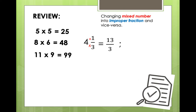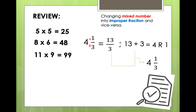So, what if from improper fraction to mixed number? Just simply divide the numbers. 13 divided by 3 is equal to 4 remainder 1. Therefore, 13 over 3, or 13 divided by 3, is equal to 4 and 1 third. Great job!